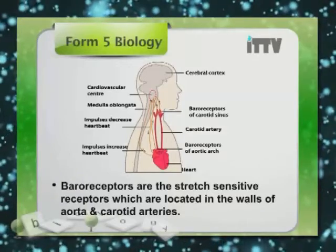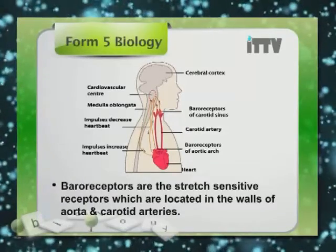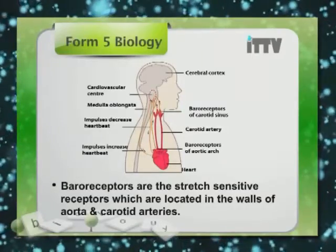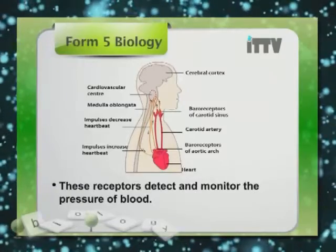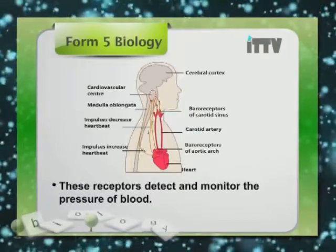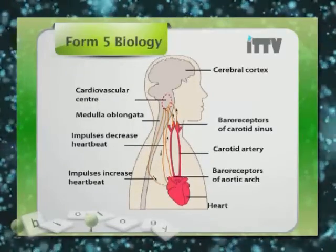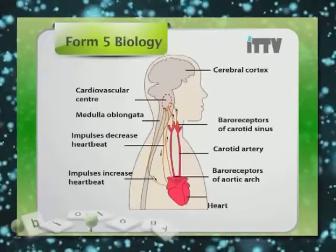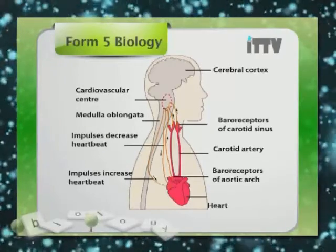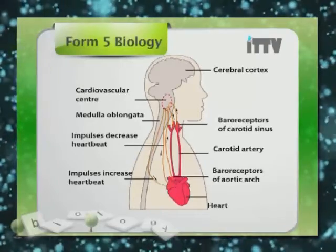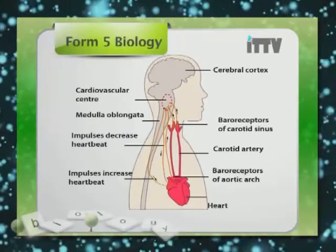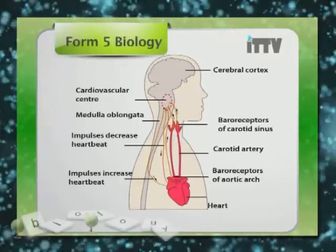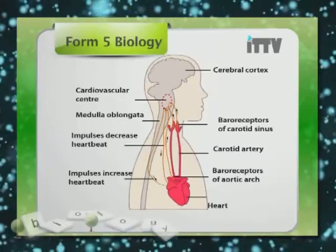Baroreceptors are the stretch-sensitive receptors located in the walls of the aorta and the carotid arteries. Baroreceptors detect and monitor the pressure of the blood. They are located in the carotid sinus and also in the aortic arch. They are very important because they monitor the blood pressure which flows to the body and the brain.